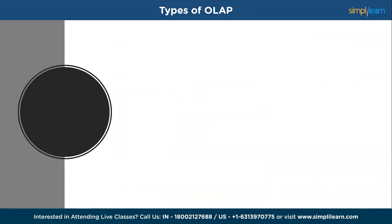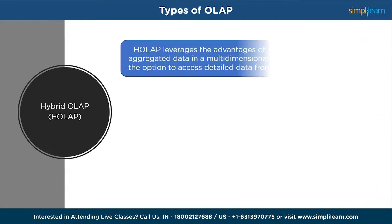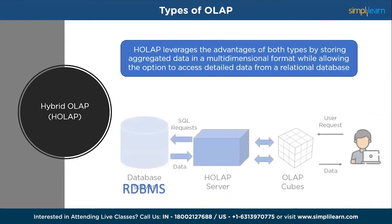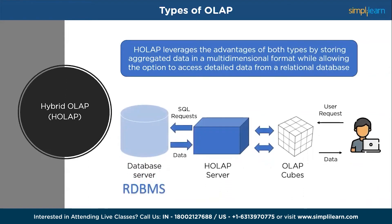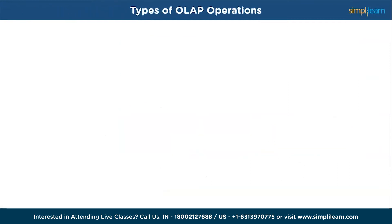The next type of OLAP is Hybrid OLAP, or HOLAP. HOLAP systems combine the features of MOLAP and ROLAP. They leverage the advantages of both types by storing aggregated data in a multidimensional format similar to MOLAP, while allowing access to detailed data from a relational database similar to ROLAP. HOLAP systems provide a balance between query performance and flexibility and are suitable for applications requiring a mix of detailed and summarized data analysis.